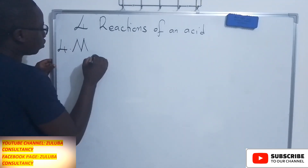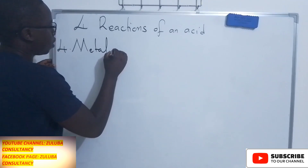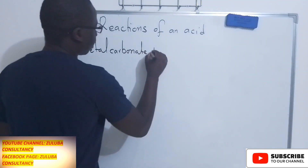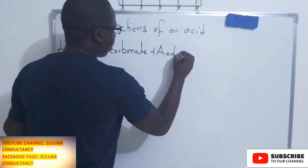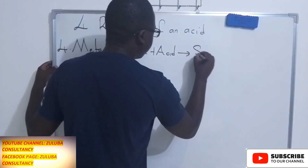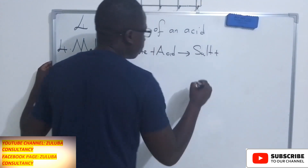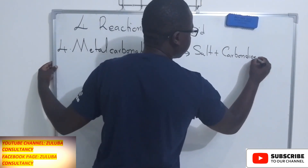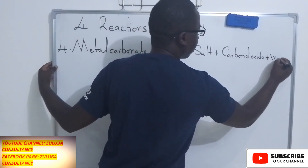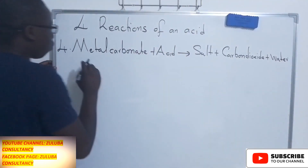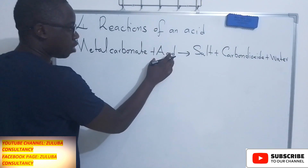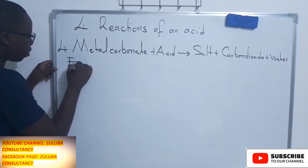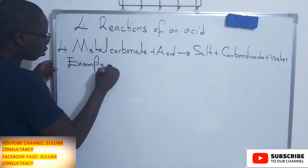When a metal carbonate reacts with an acid, the products are: first, a salt, then carbon dioxide, and water. So when a metal carbonate reacts with an acid, we have salt, carbon dioxide, and water. Let's look at an example.